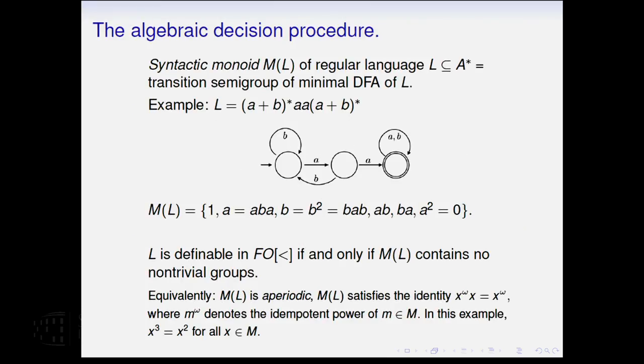For first-order logic, to give you the example, these algebraic decision procedures are based on the syntactic monoid of the language. What you do is you construct the minimal DFA for the language, and you look at the transitions on the set of states that are induced by the words. This forms a finite semigroup, a finite monoid, because it has an identity under composition.